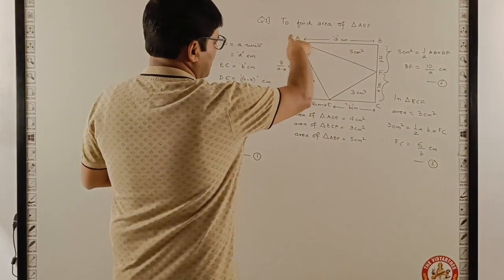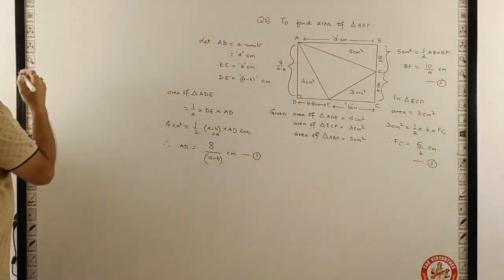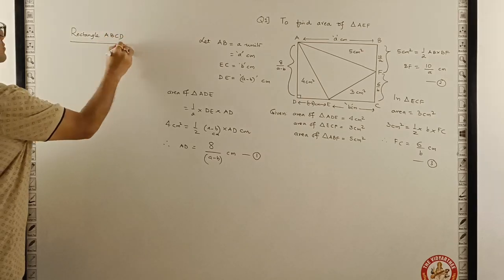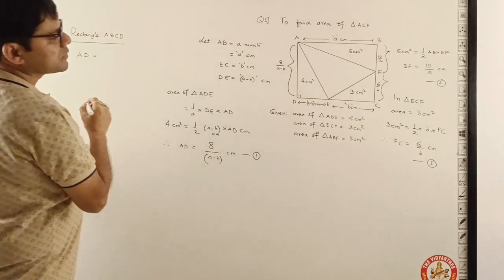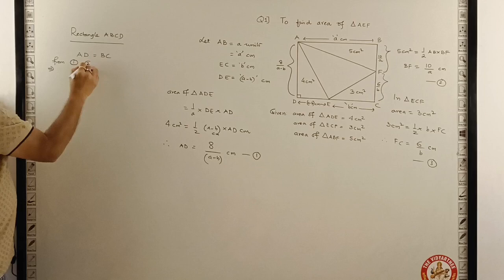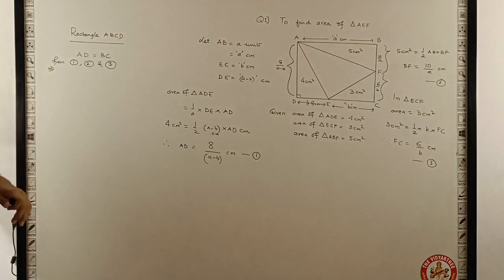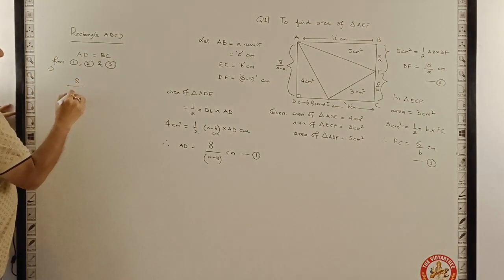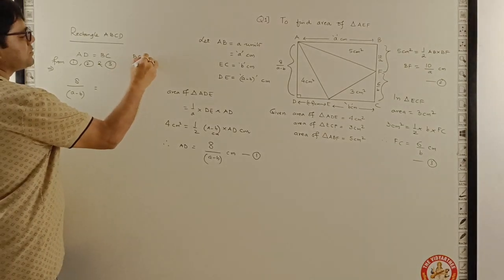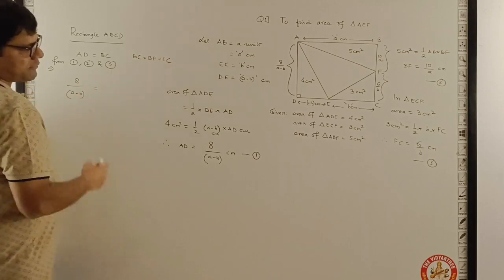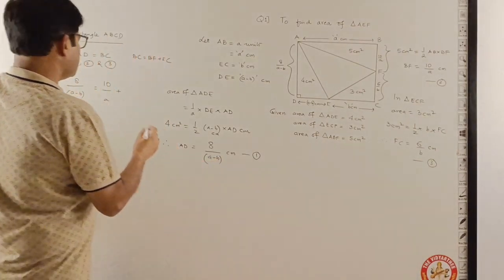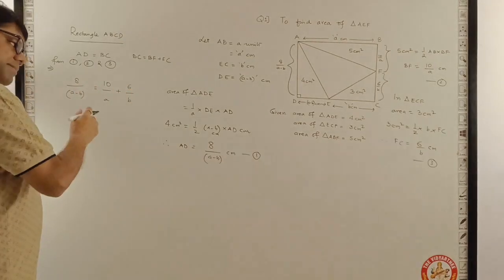Now from the dimensions which we have got for AD and BC, as the rule of a rectangle, AD is equal to BC. Now this means from result 1, 2 and 3, AD is 8 upon A minus B. This equals BC which is BF plus FC. So BC is 10 by A plus 6 by B.